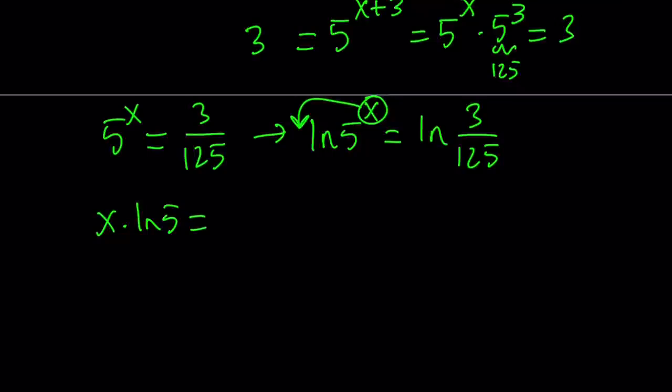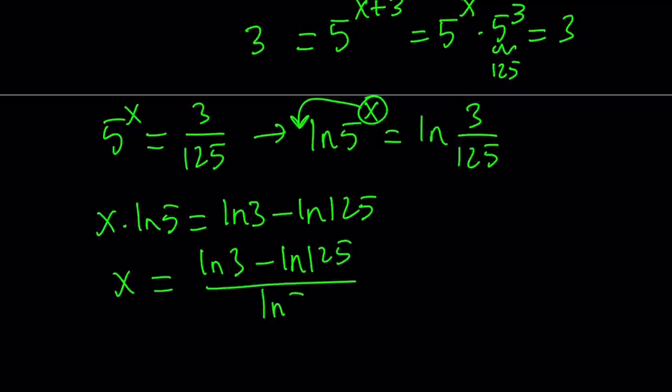Obviously, you can also use base 5, but I don't want to use that. So, let's move the x to the front. We're going to get x times ln 5 equals ln 3 over 125. We can use the quotient rule here. Remember, if you have ln A over B, it can be written as ln A minus ln B. So, we can write this as ln 3 minus ln 125.